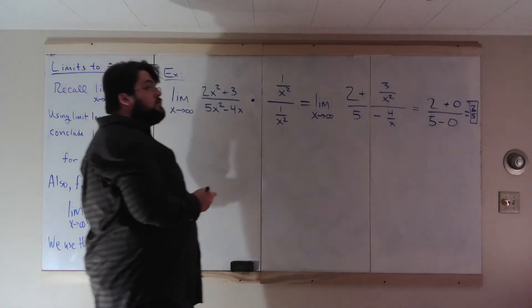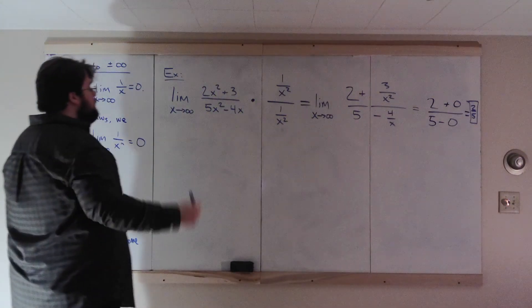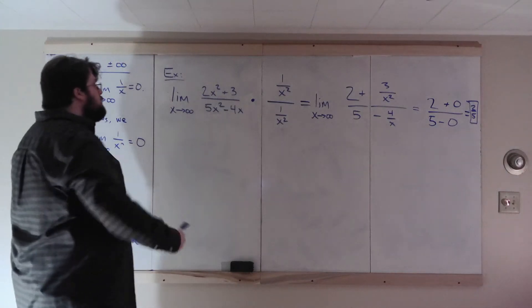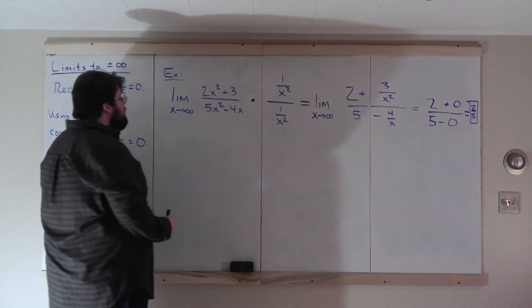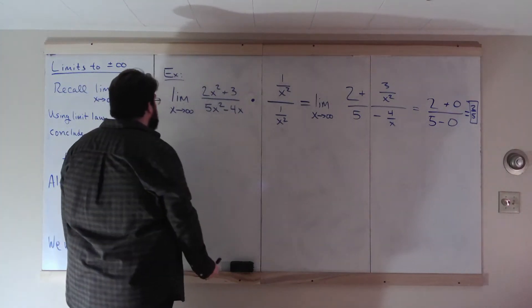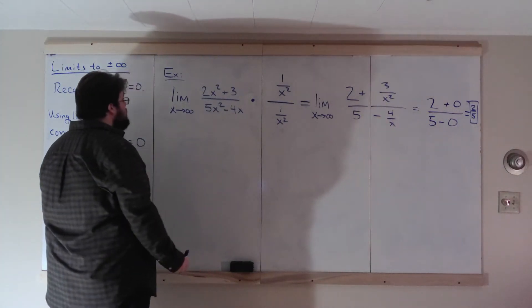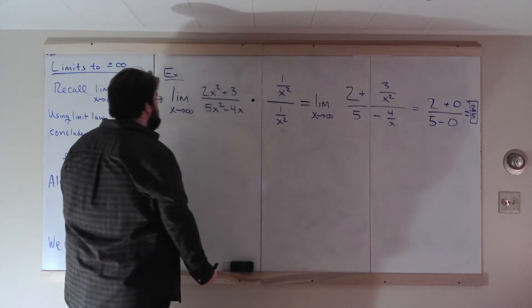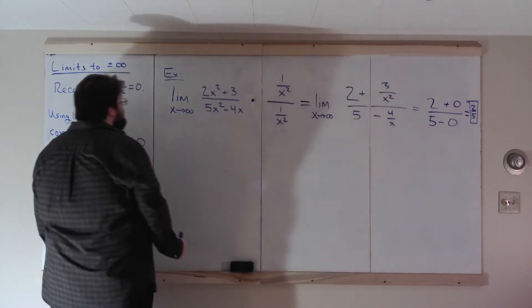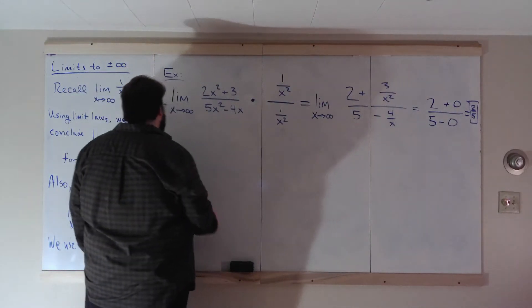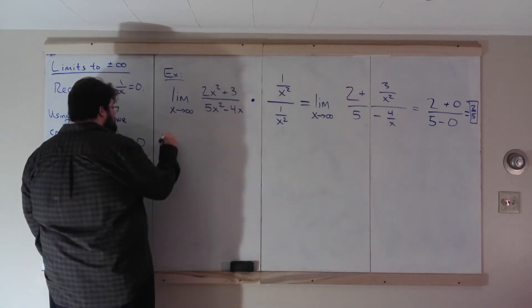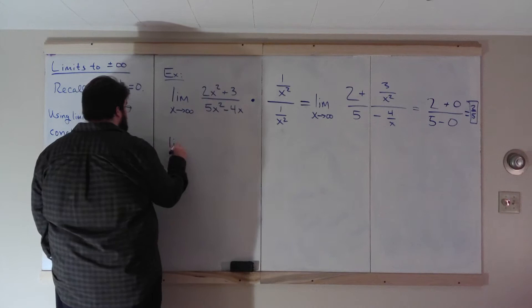This equals 2/5. If you use L'Hôpital's Rule, you'd get the same answer — applying it twice: first giving (4x + 3)/(10x − 4), then applying again giving 4/10, which reduces to 2/5.